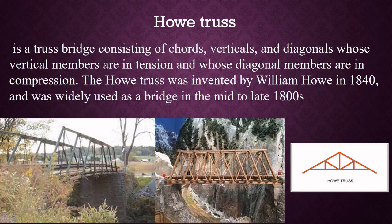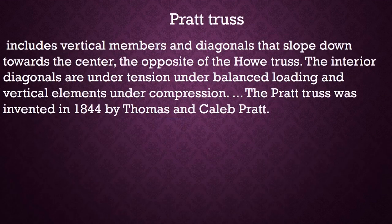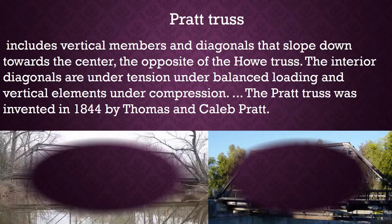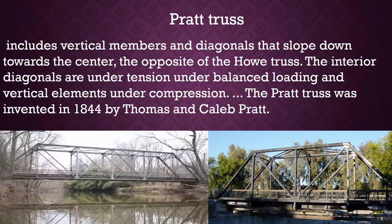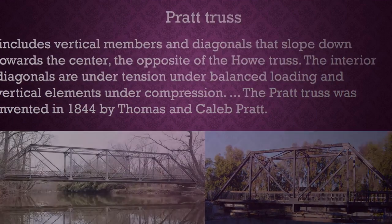The Pratt truss includes vertical members and diagonals that slope down towards the center, the opposite of the Howe truss. The interior diagonals are under tension under balanced loading and vertical elements are under compression. The Pratt truss was invented in 1844 by Thomas and Caleb Pratt.